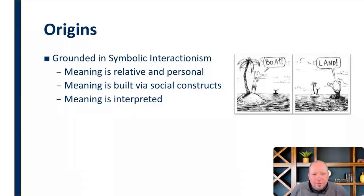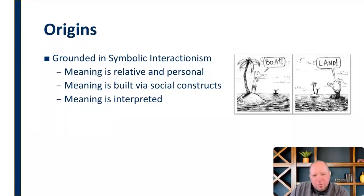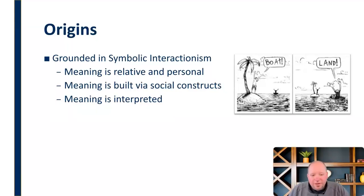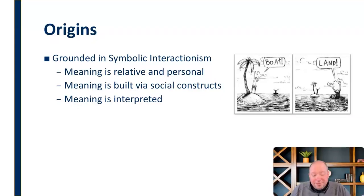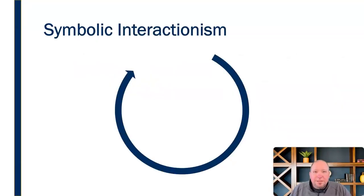You can see this in the cartoon here — one person sees a boat and gets excited, another sees the land and gets excited about something completely opposite. Their meaning is interpreted. What does it mean that they see these things? Why are they so excited about something so simple and so opposite? Because meaning is deeply personal, relative, built via social constructs, and ultimately interpreted.